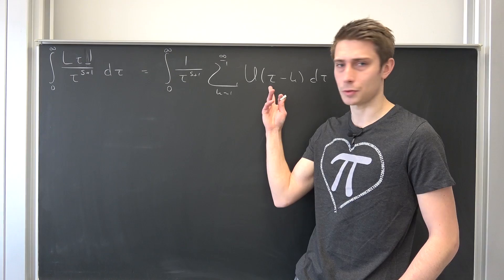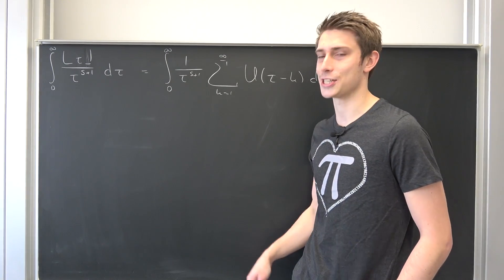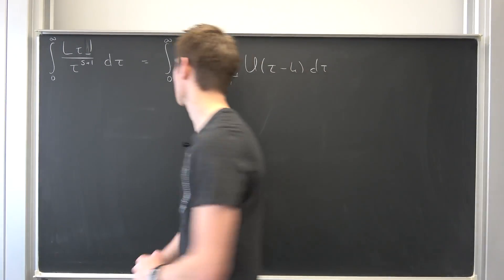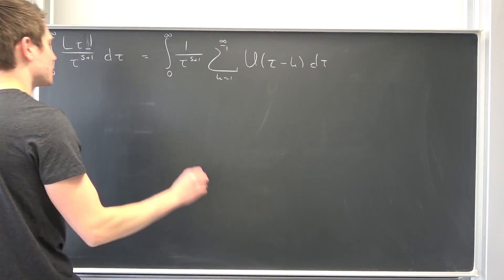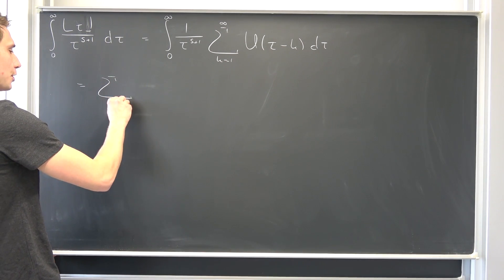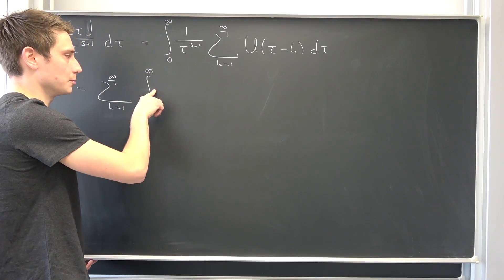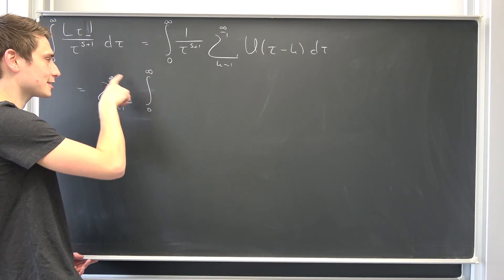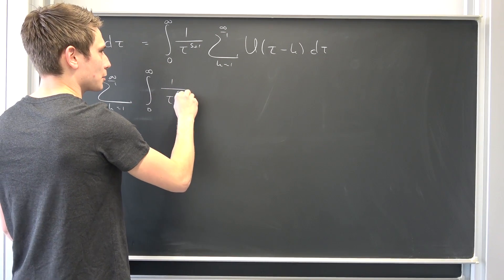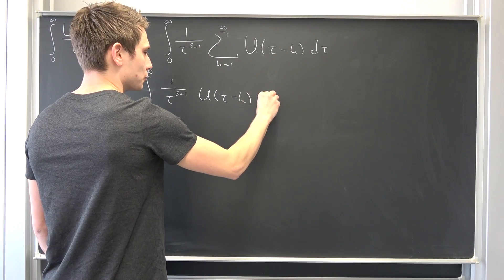We're not going to worry about the interchange of summation and integration — we're just going to do it. Stuff is strictly positive here, so we can probably Fubini this. Let's just bring the summation to the outside. That gives us a sum to infinity of the integral from 0 to infinity of 1 over tau to the s plus 1 power times the unit step function of tau minus k, integrated with respect to tau.